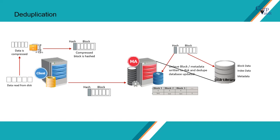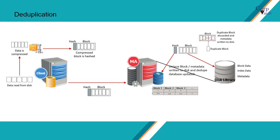The backup process continues, and during the process, if the signature is identical to an existing signature, additional entries are created in the deduplication database with pointers to the existing storage. The duplicate data block is discarded, and metadata is written to disk along with index data. The deduplicated data is stored in specially designed container files to increase system throughput and scalability.